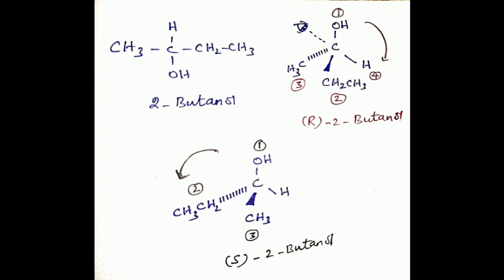If the sequence 1, 2, 3 is clockwise, it is R. If the sequence 1, 2, 3 is opposite side or anti-clockwise, it is S. R and S come from Latin words: R means rectus and S means sinister, that means right and left respectively.